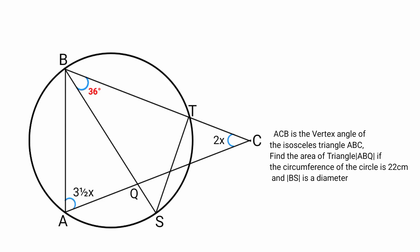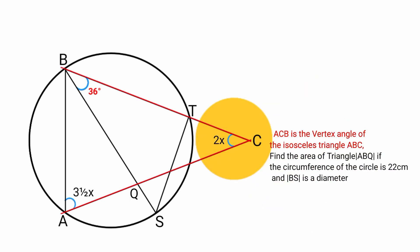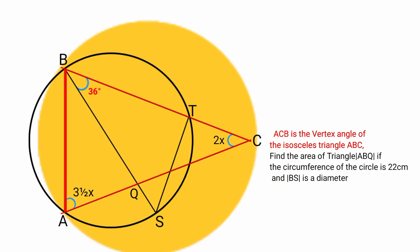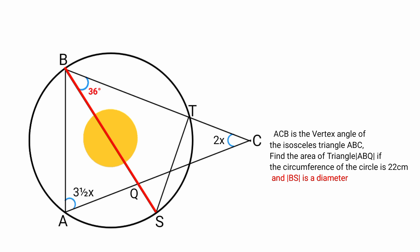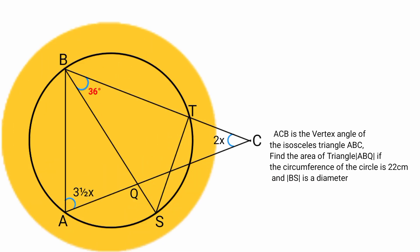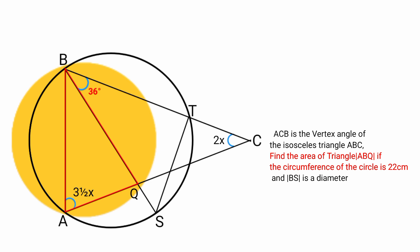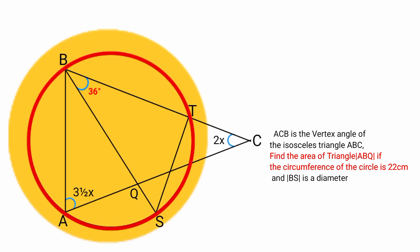Welcome back to another interesting question. Angle ACV is a vertex angle of an isosceles triangle, which means the two base angles of the triangle are equal. Line BS is a diameter of the circle. Find the area of triangle ABQ if the circumference of the circle is 22 centimeters.